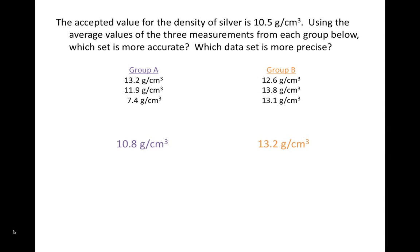The average for group A, 10.8 grams per centimeter cubed, is very close to the accepted value for the density of silver of 10.5 grams per centimeter cubed. So group A has the most accurate data set.